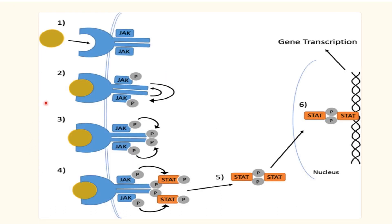In this diagram we can see the receptors on the cell membrane. Inside the cytoplasm, each receptor is attached to two JAKs — usually different ones, so usually they are heterodimers. When these receptors become attached to their signal or cytokine, JAK activity is triggered: each JAK member phosphorylates the other.